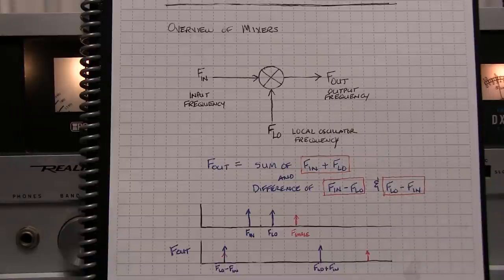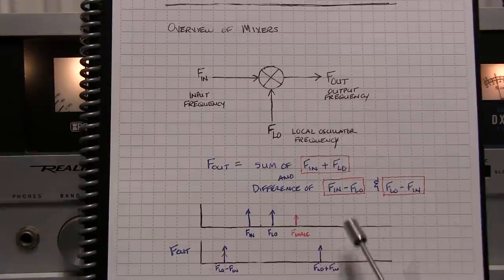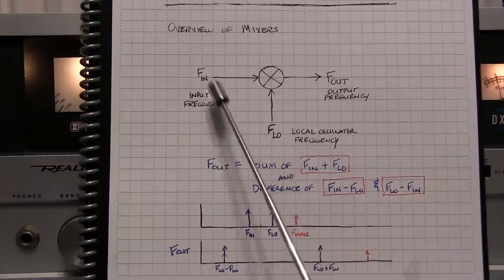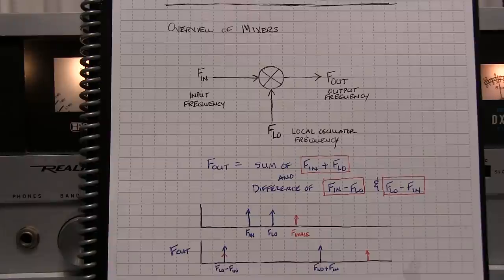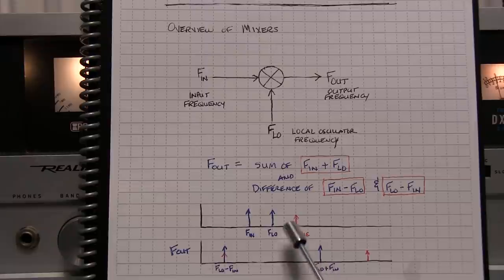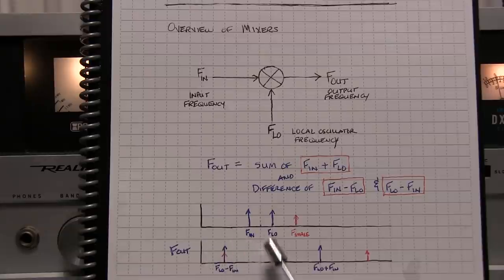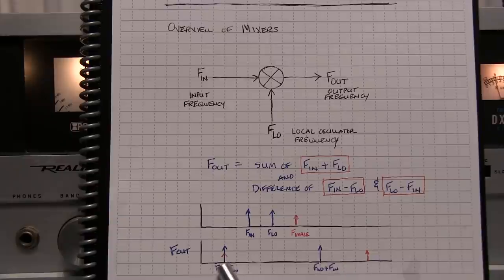Now typically a superheterodyne receiver is going to take advantage of really just one of these. And in most cases it is the LO minus FIN, meaning that the local oscillator frequency is designed to be higher than the input frequency. But that's not always the case. There are plenty of radios that are just the other way around. So if we consider the case where the local oscillator frequency is higher than the input frequency, what we're going to get out of that is the difference, FLO minus FIN, so a signal sitting here, as well as the sum, which is way out here. Now this is very far away from this component here, so that's easy to filter away.